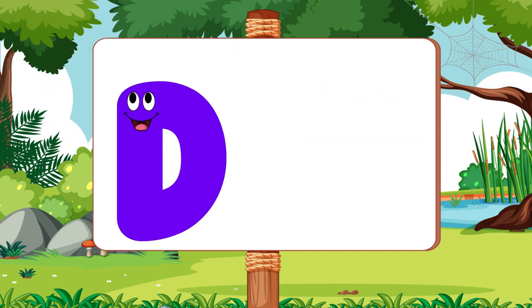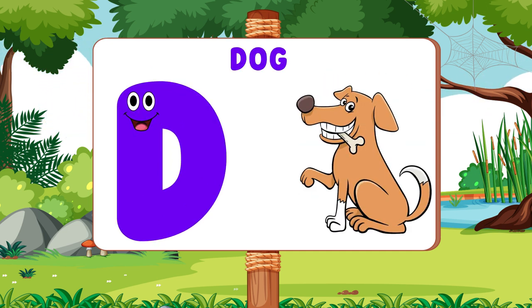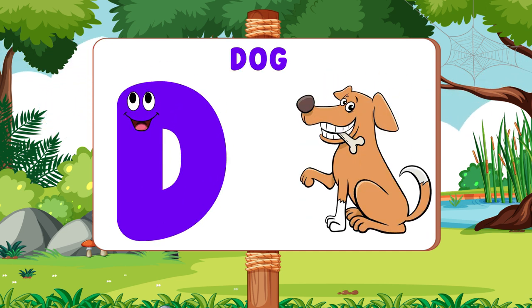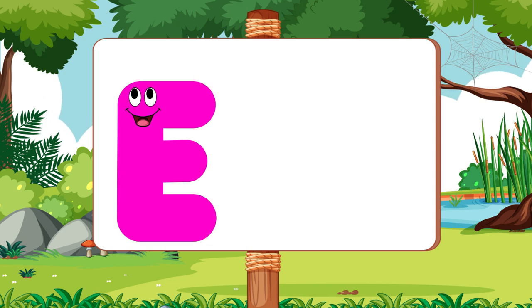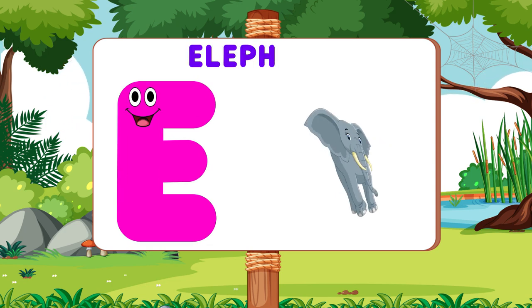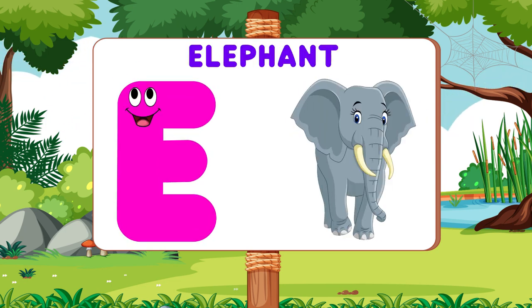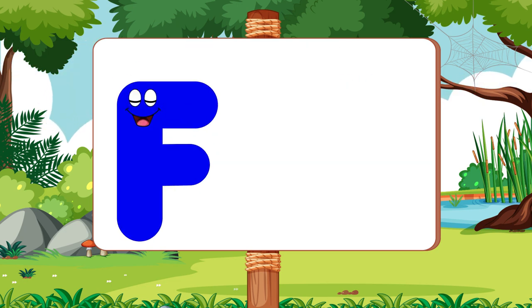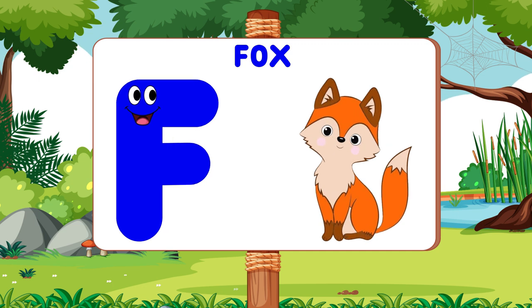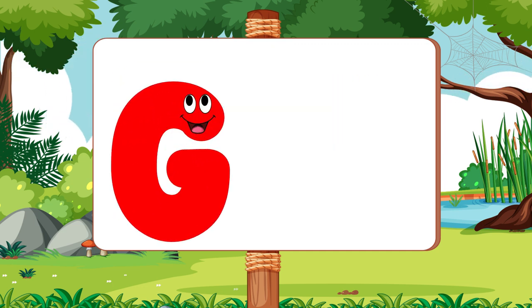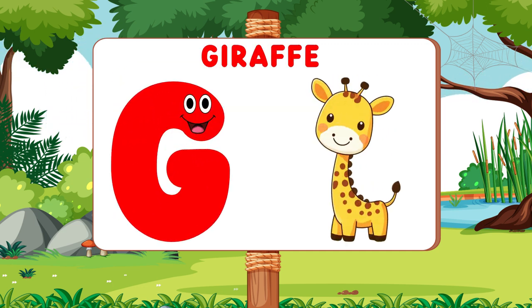D is for Dog. D, D. Dog. E is for Elephant. E, E. Elephant. F is for Fox. F, F. Fox.